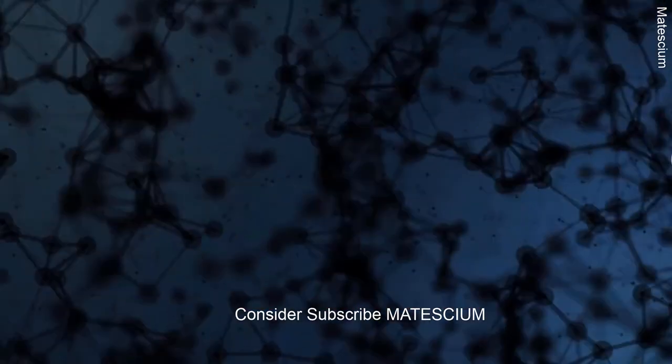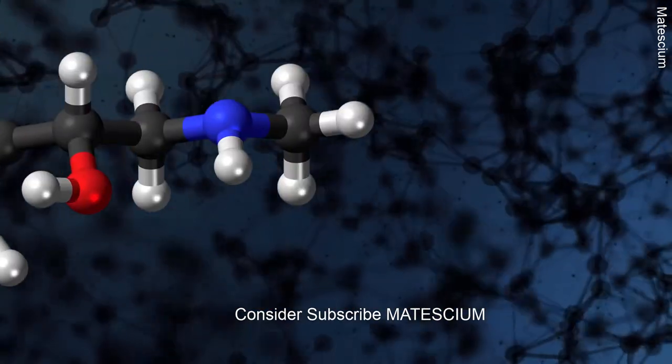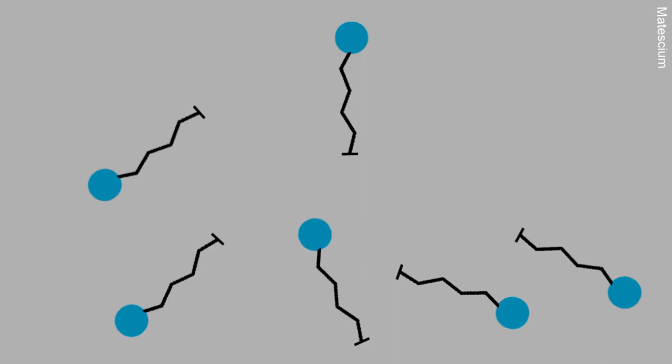We have to pay closer look to the structure of soap molecules. Generally soap is made of pin-shaped molecules. Each soap molecule has one head and one tail.